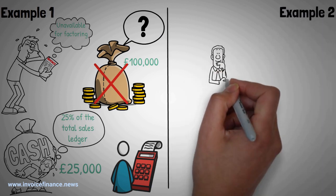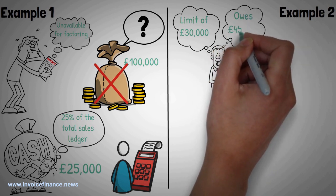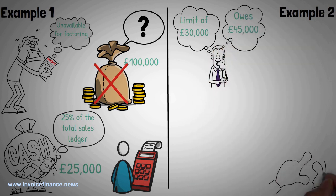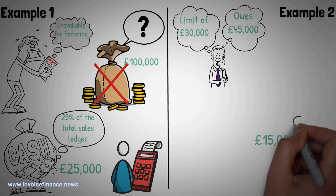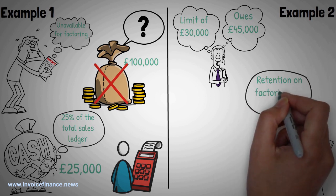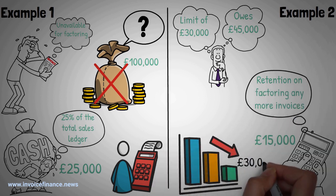Example 2: A debtor has a funding limit of £30,000 but owes £45,000. Thus, a factoring firm will calculate the difference, in this case £15,000, and will place a retention on factoring any more invoices from this debtor until the debt falls to below £30,000.